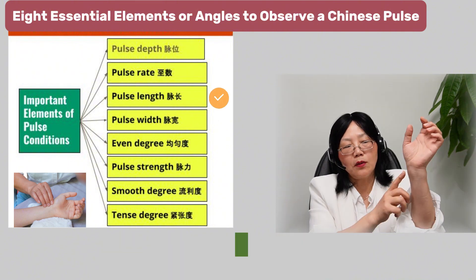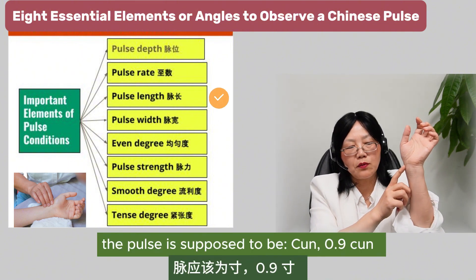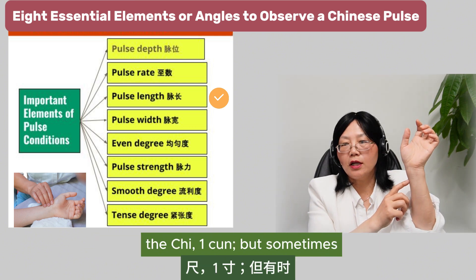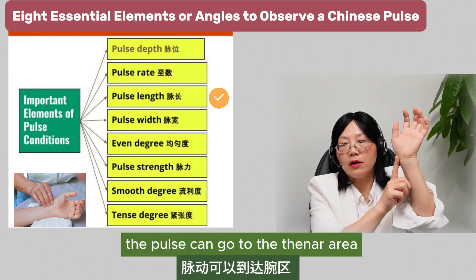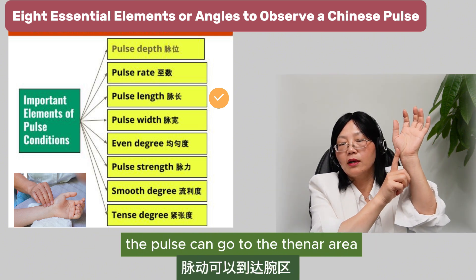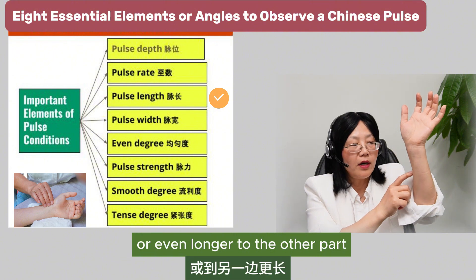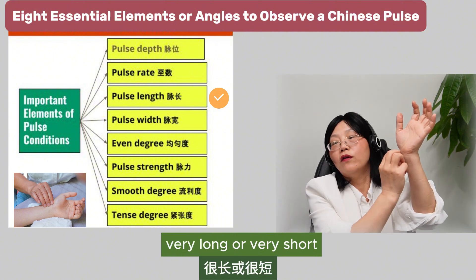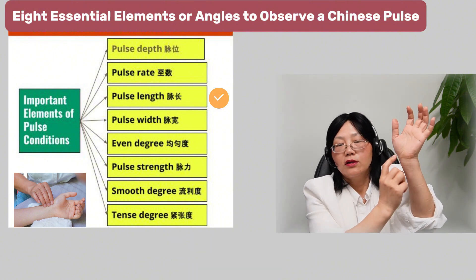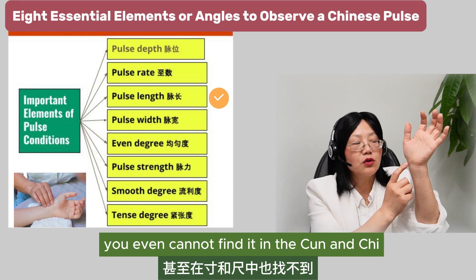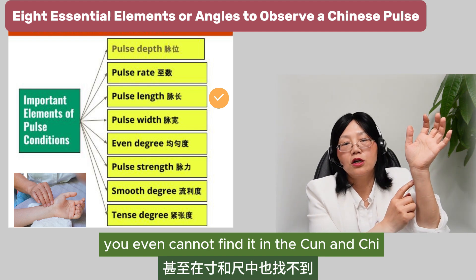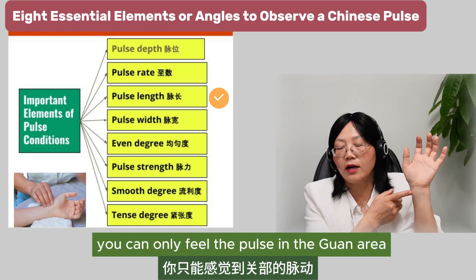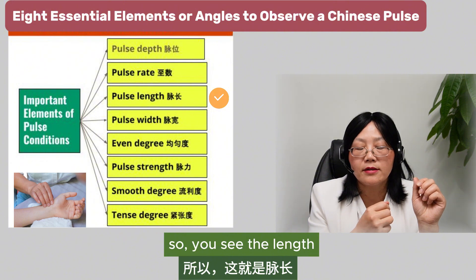The length: the pulse is supposed to be at cun, about 0.9 cun, and the chi, one cun. But sometimes the pulse can extend to a thinner area or go even longer. Or it can be very short — you may only find it in the guan area. That shows you the length.